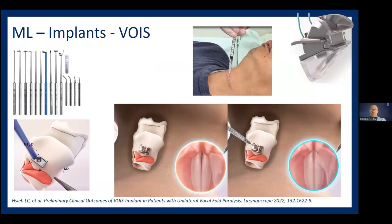Just as silk hyaluronic acid may be a game-changer for injection, there may also be a game-changer for framework surgery — the voice implant. It is a pre-manufactured implant similar to Montgomery, but it is a balloon that can be injected and adjusted. After placing it inside the thyroid cartilage and medializing the vocal folds, you can reposition it during surgery and even after surgery. For example, if edema subsides after surgery, you can refill it. I think this will be a game-changer for treating our unilateral vocal fold paralysis patients.